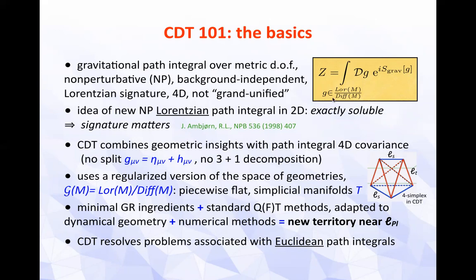The carrier space — the configuration space of the path integral — is a regularized version of the space of geometries, by which I mean the space of equivalence classes of Lorentzian metrics modulo the action of four-dimensional diffeomorphisms classically. These are piecewise flat simplicial manifolds T, and simplicial means made from simplices — higher four-dimensional generalizations of triangles. Here is a building block, the four-simplex produced in CDT, from which we assemble four-dimensional curved piecewise flat spacetimes.